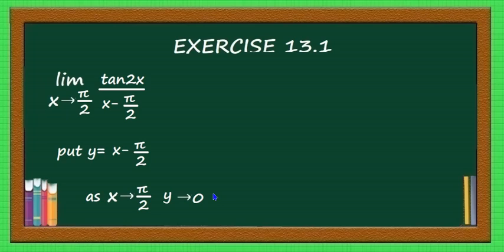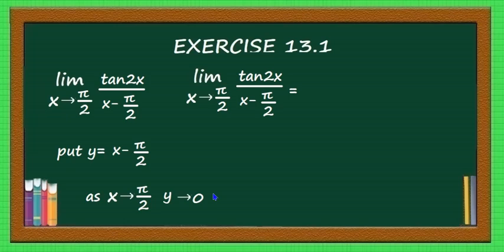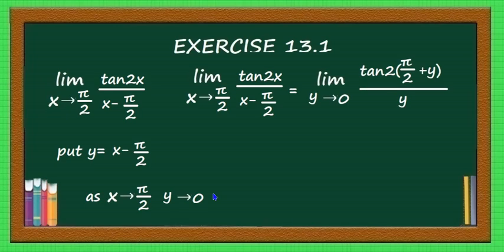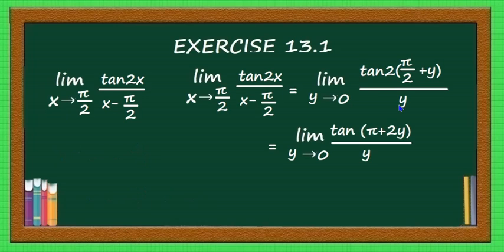Substituting into the expression: x = π/2 + y, so the limit becomes limit y→0 of tan(2(π/2 + y)) divided by y, which equals limit y→0 of tan(π + 2y) divided by y. Using the identity tan(π + x) = tan x, this simplifies to limit y→0 of tan(2y)/y.